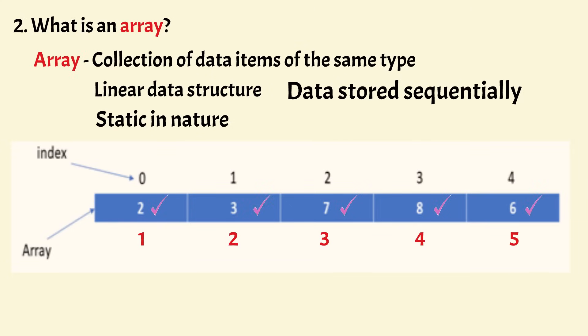The array stores integers 2, 3, 7, 8, and 6. The numbers above them are called the index, which represents the location of the data items in an array. So if we want to access the integer 8, we must specify index 3 and this will retrieve the data item present at index 3, which is 8.